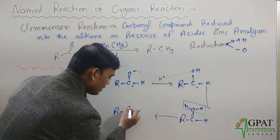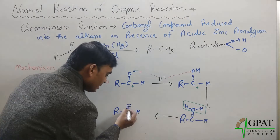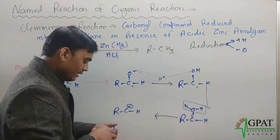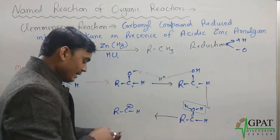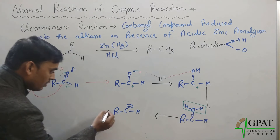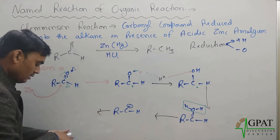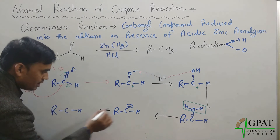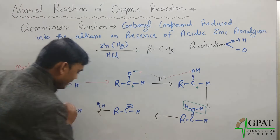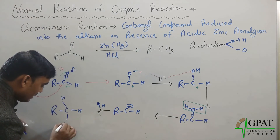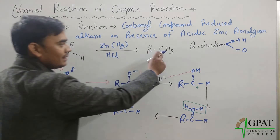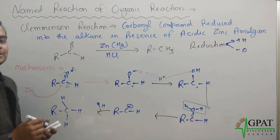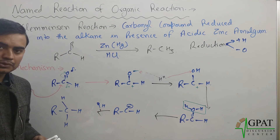Since the bond breaks, a carbocation forms, and our medium has hydrogen ions — so 2 hydrogen ions will be added here, giving R-CH₃. And that was our product. This is the mechanism behind the Clemmensen reduction reaction. I hope you liked it. Thank you.